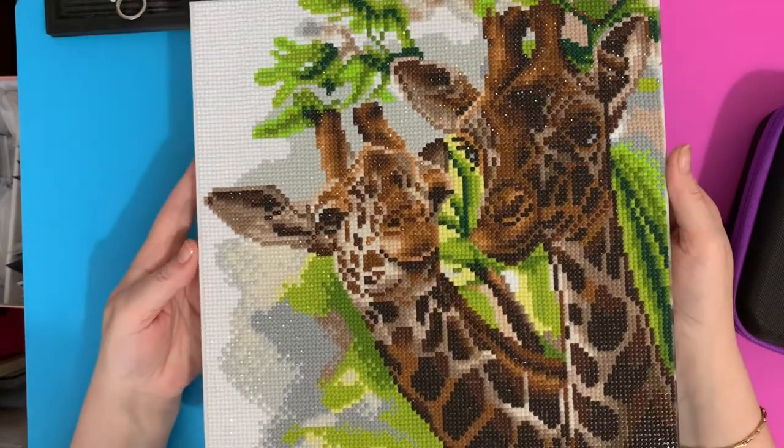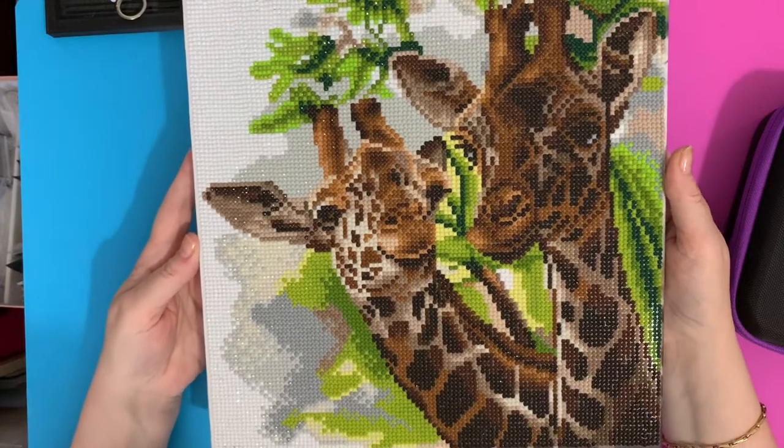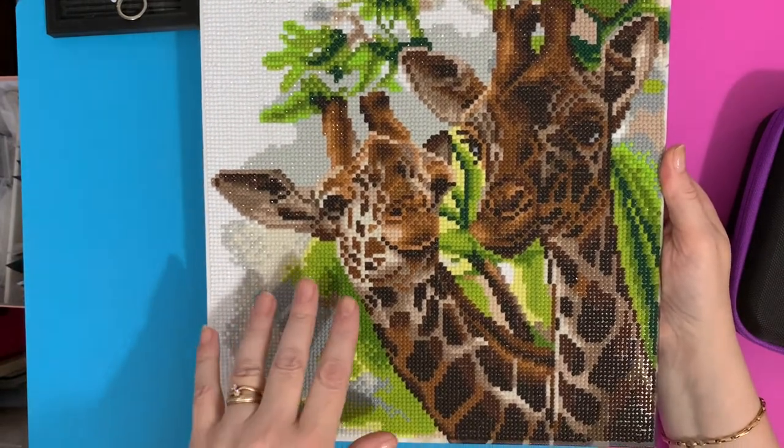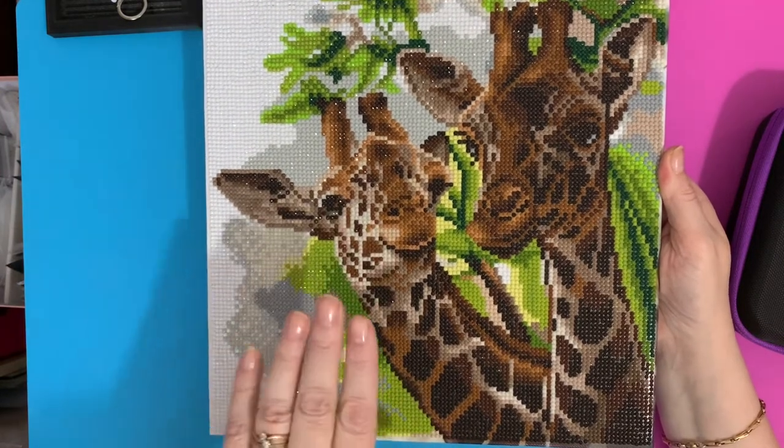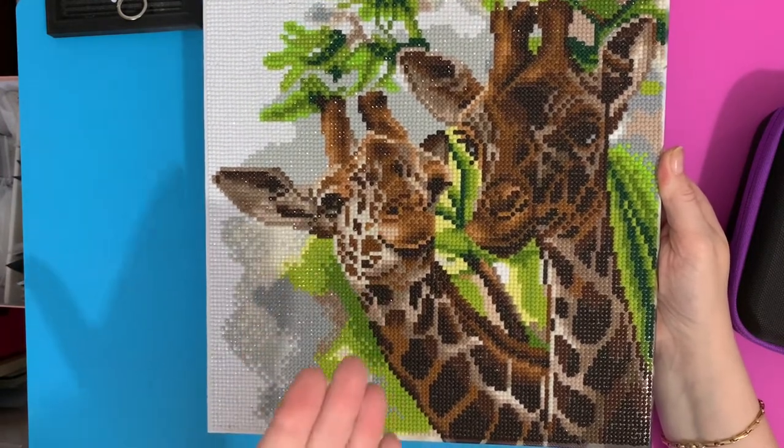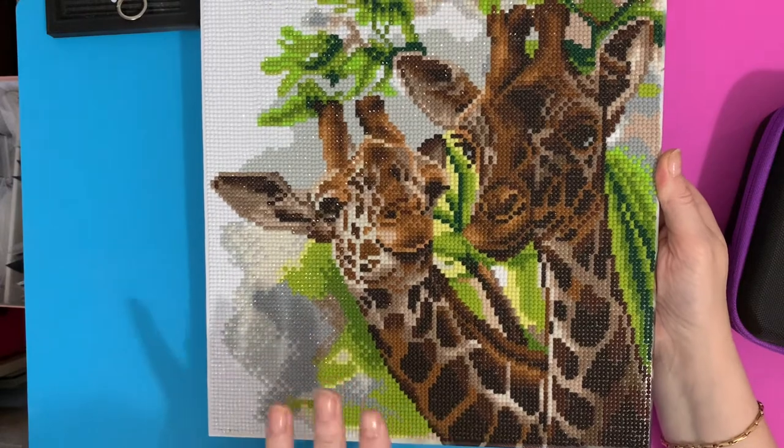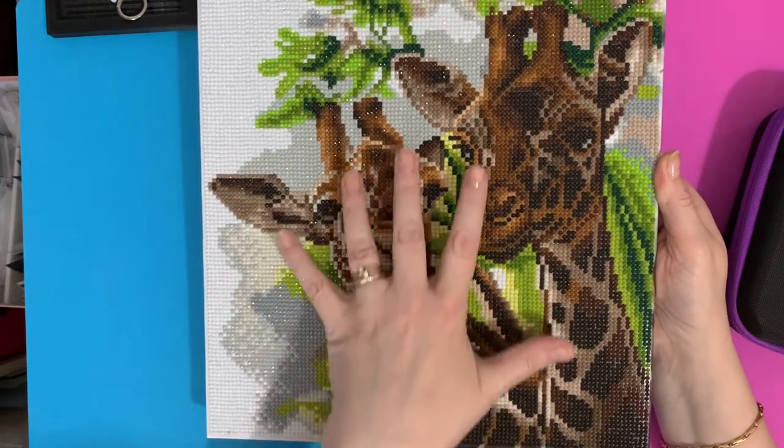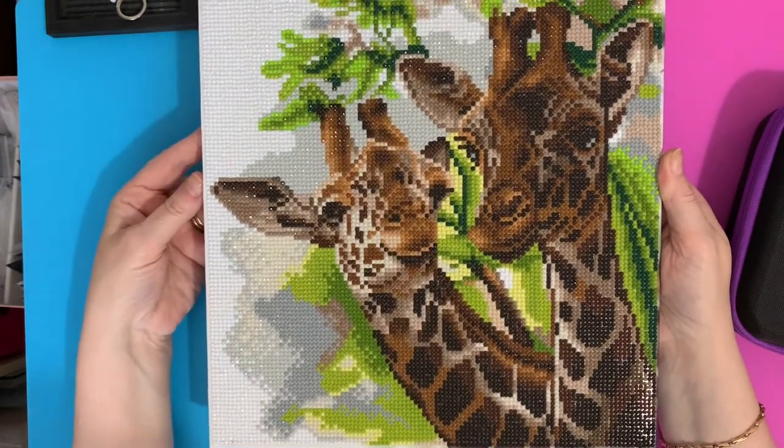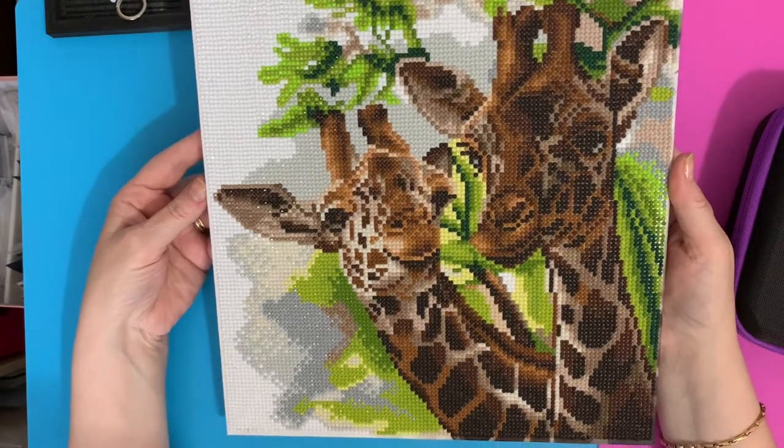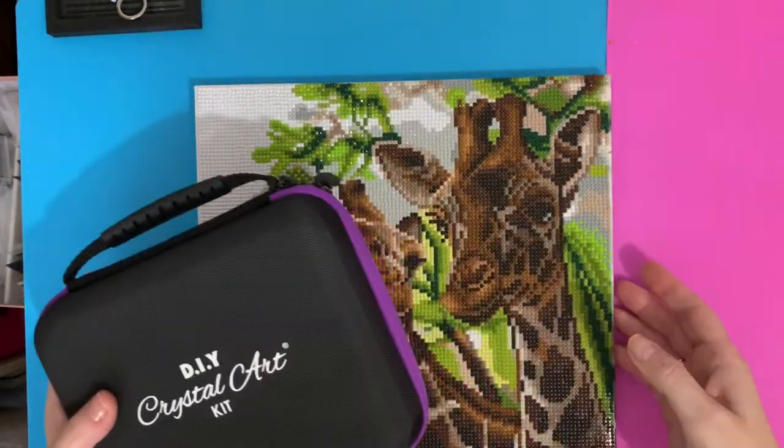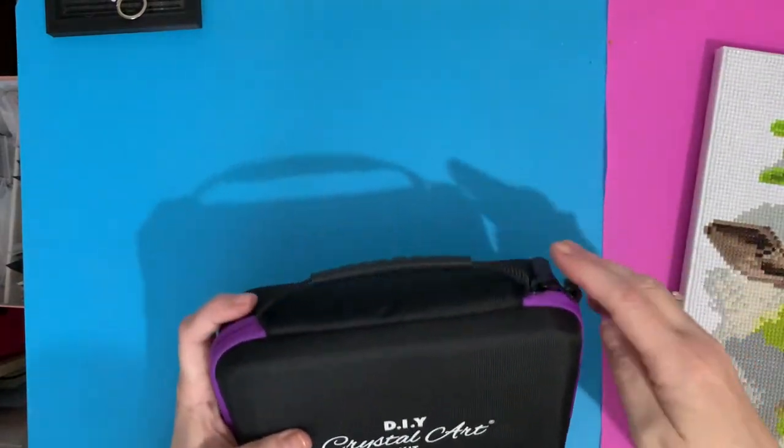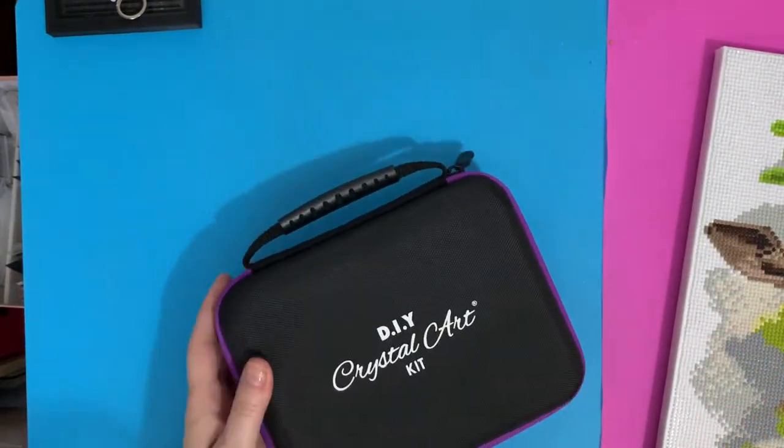I just have like a brayer, a roller, that I go over the canvas with once I've completed it just to make sure that they're all stuck down. But yeah, it was fun to do this one and I love the end result. Looking at the picture now, because of the colors at this side particularly, you get like that depth of field. It feels as though it's really 3D and the giraffe is really in the front and all the trees are right in the back there.